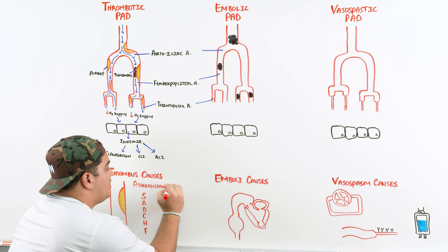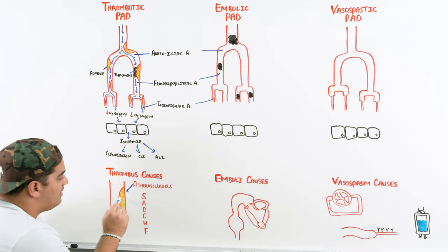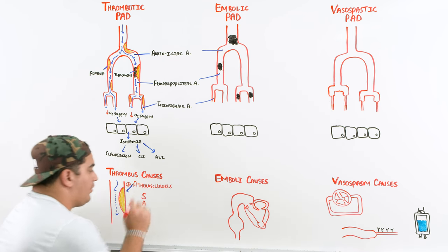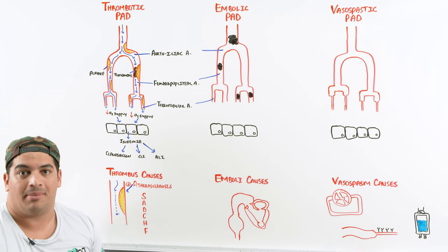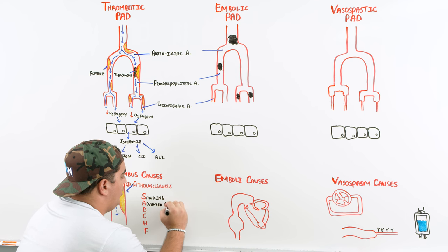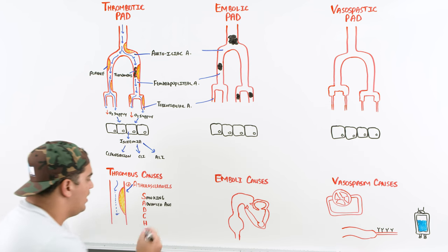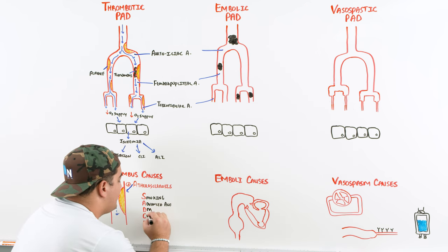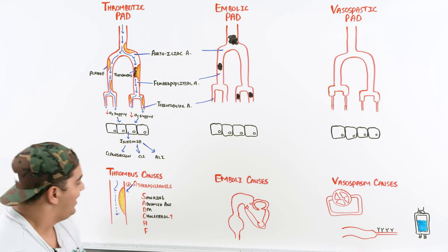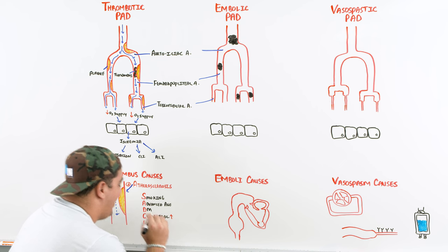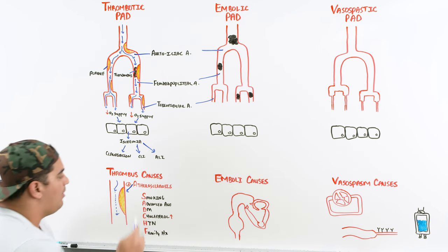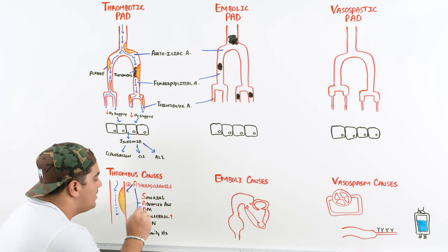Atherosclerosis is the driving factor behind plaque formation. The risk factors can be remembered with the mnemonic SAD CHF: Smoking is a huge risk factor; Advanced age, greater than 55 for females and greater than 45 for males; Diabetes mellitus; dyslipidemia or high Cholesterol; Hypertension; and Family history. All of these increase the risk of atherosclerosis.